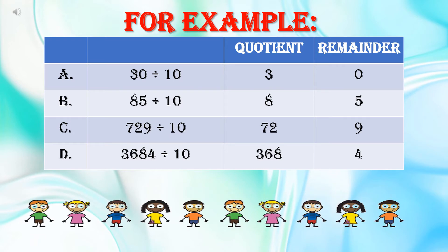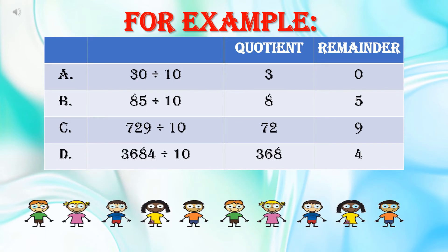729 divided by 10. तो ones place पर कौन सा digit है यहां? 9. So 9 is the remainder. बाकि digits कौन से बचे? 7 and 2. So 72 is the quotient.